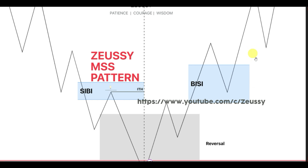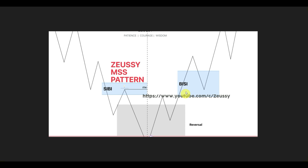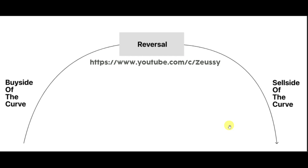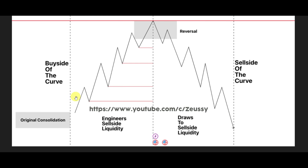Now let's move on to the market maker sell model. On the left side of the curve we have the buy side of the curve, and then we trade into a reversal price level where the market starts to reverse. Then the sell side of the curve takes place. This is essentially the market maker buy model in reverse. We have accumulation phases on the left side of the curve and distribution phases on the right side.